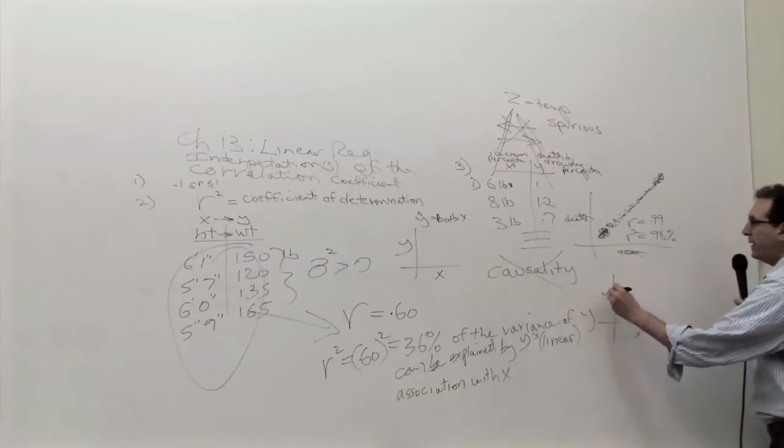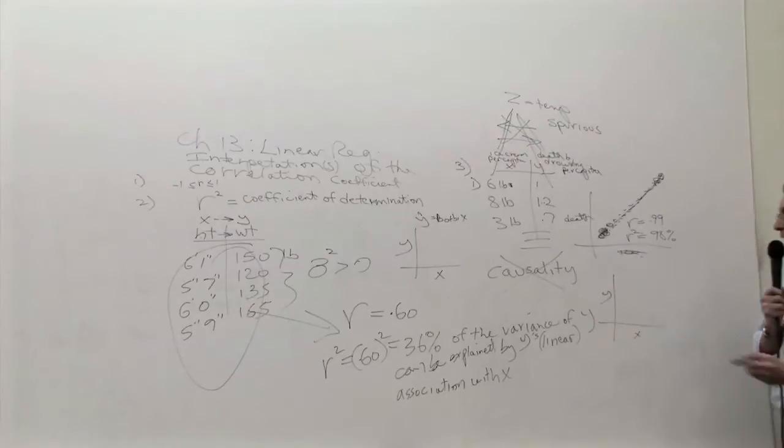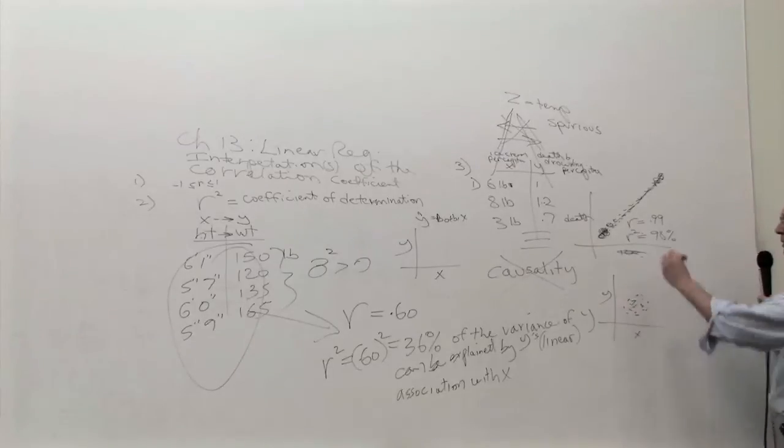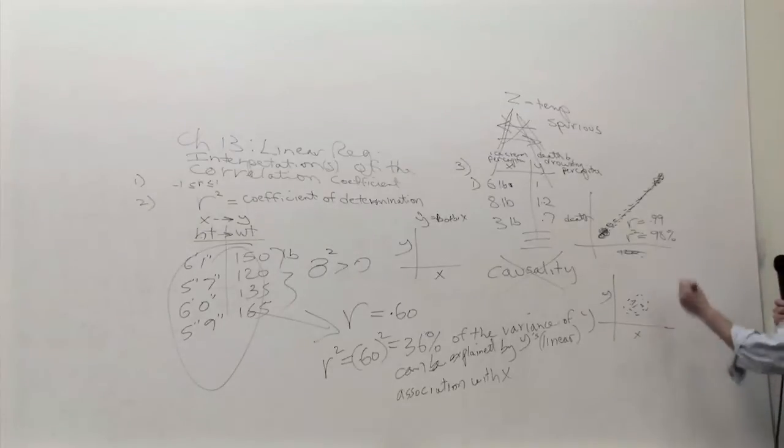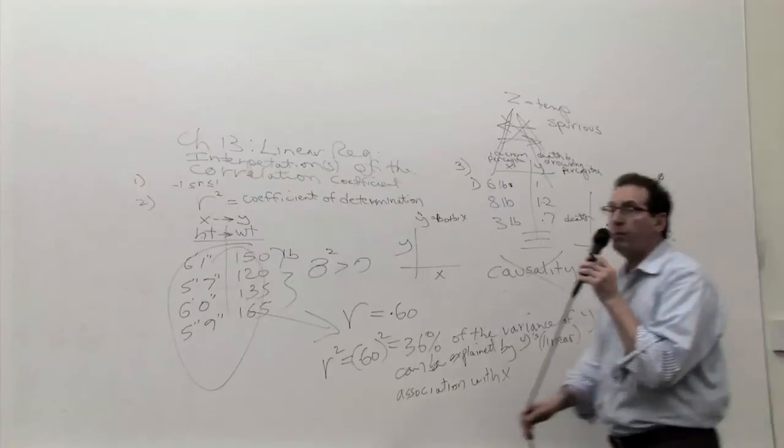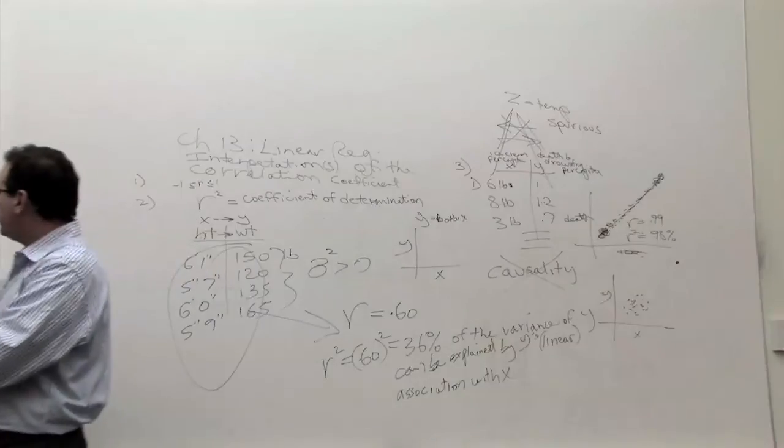Let's say somebody collects data on X and Y. And the correlation between all those variables, basically there's no correlation. Remember, a blob of dots like a circle means there's no relationship. But one person in that particular data set was extremely high on the X and extremely high on the Y.